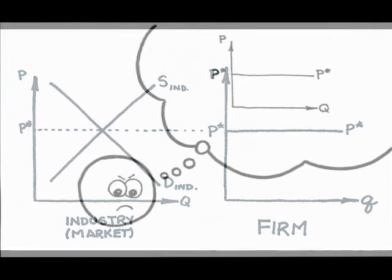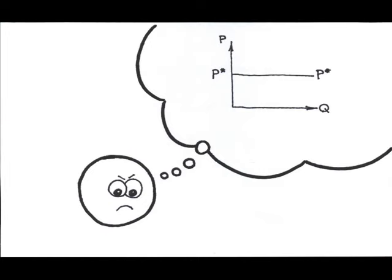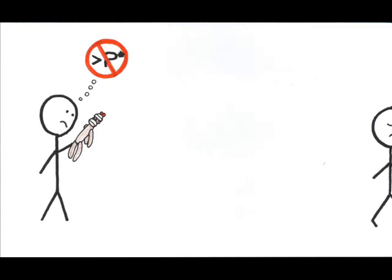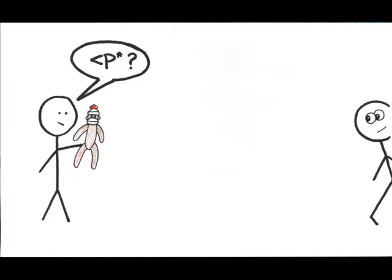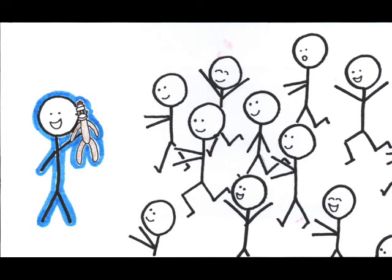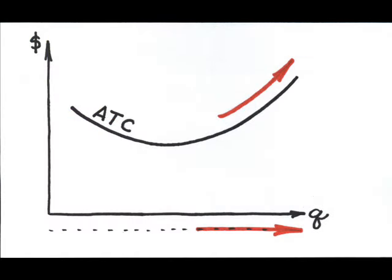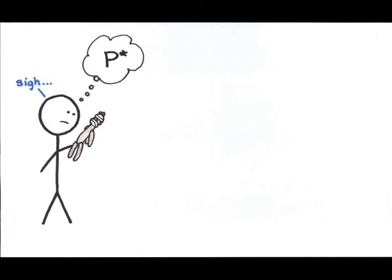What happens if the firm doesn't like this price? If it tries to charge more than P-Star, all of the customers will go someplace else, so the firm would be forced back down to P-Star. If it tries to charge less than P-Star, then all customers in the industry will come to this firm. Sounds good, right? Wrong. This firm cannot accommodate the entire industry demand. Costs would skyrocket. The firm would be forced back up to P-Star to get rid of some of the customers. All of this means that the firm is a price taker, forced to accept P-Star, the market-determined equilibrium price.